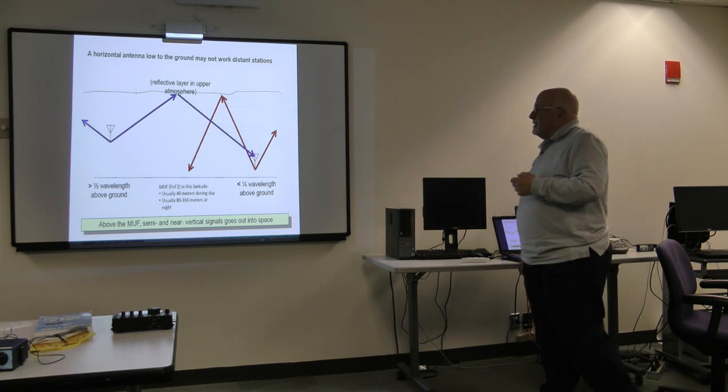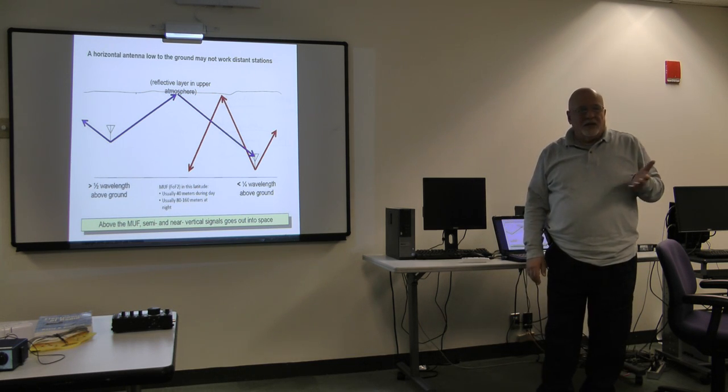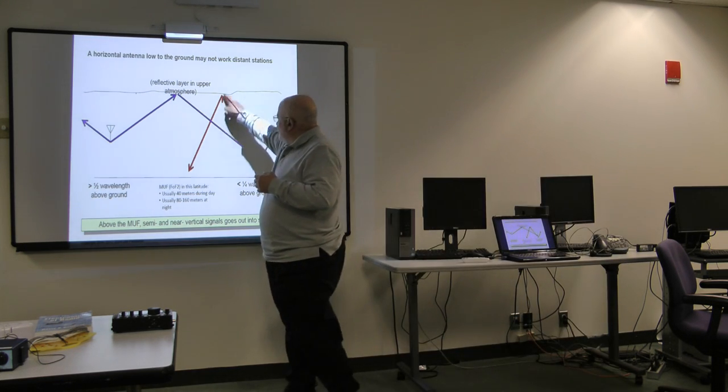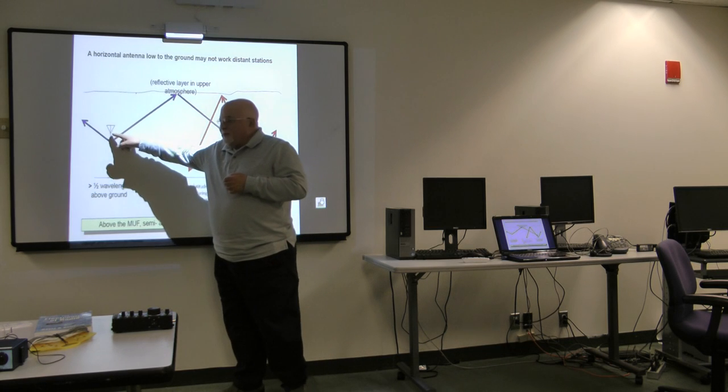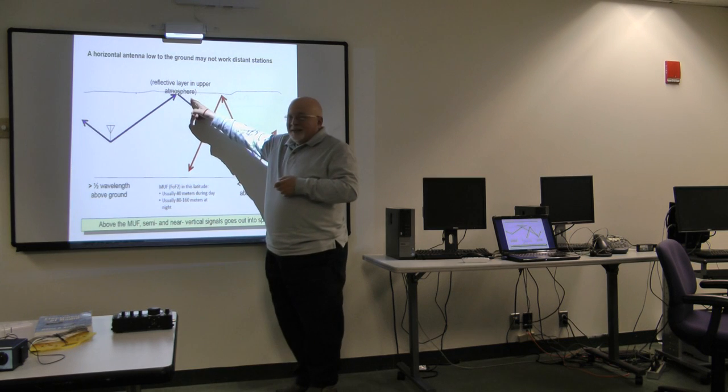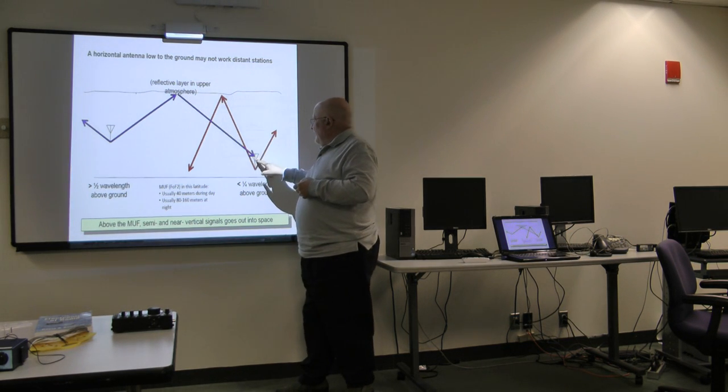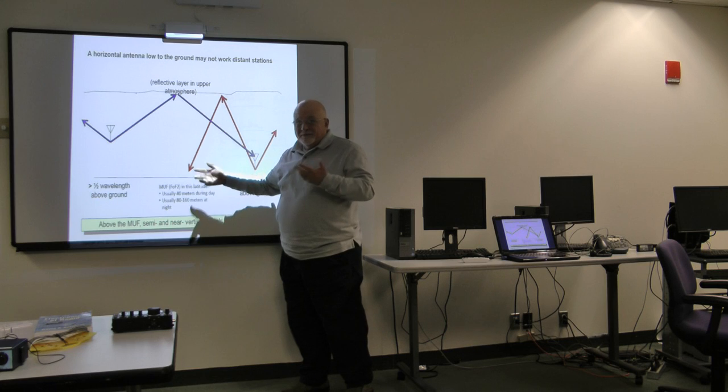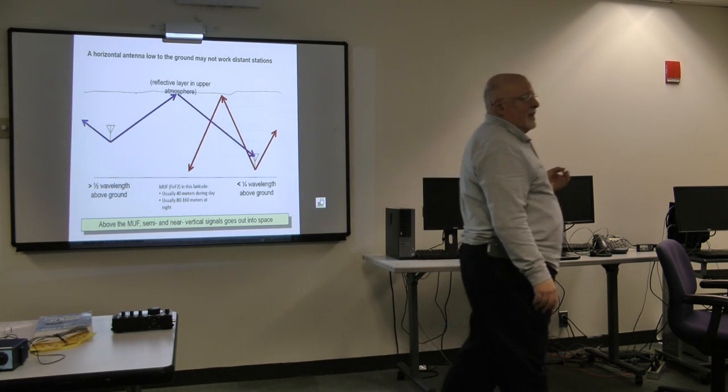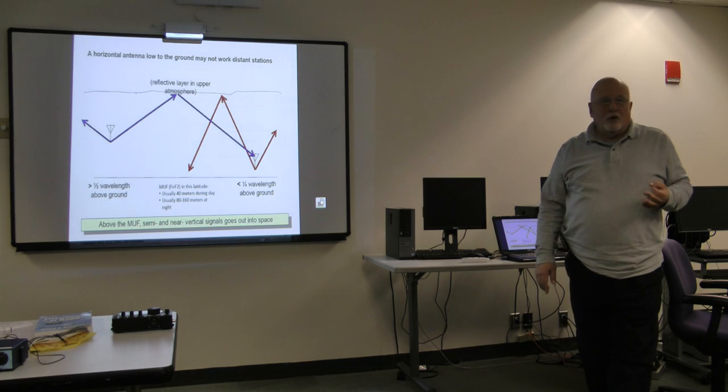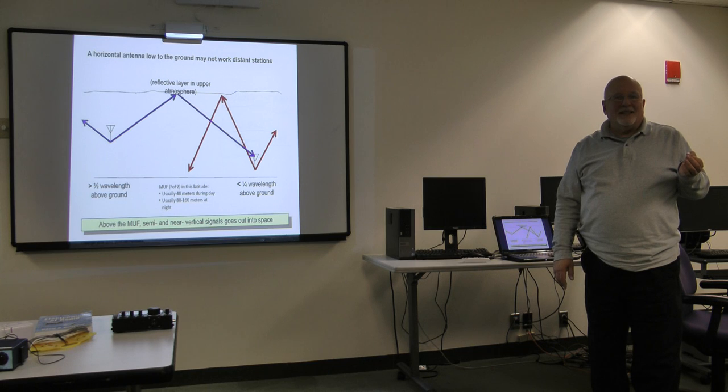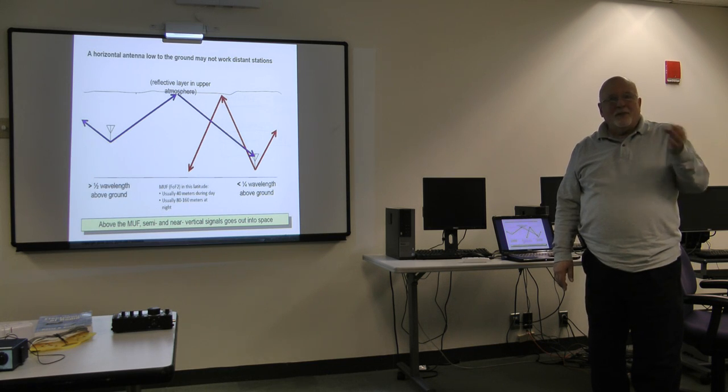So you may not work distance stations if you're using a low horizontal antenna because your signal is going to go like this. The distance station who's got a nice beam up on top of a 65 foot tower, he's got a nice angle and he's hitting you here, but your signal is only going there. So if you're going to put up a horizontal antenna, you have to understand that you're mostly going to be local stations, and only those local stations who have a similar kind of antenna situation to be able to bounce and hit you.